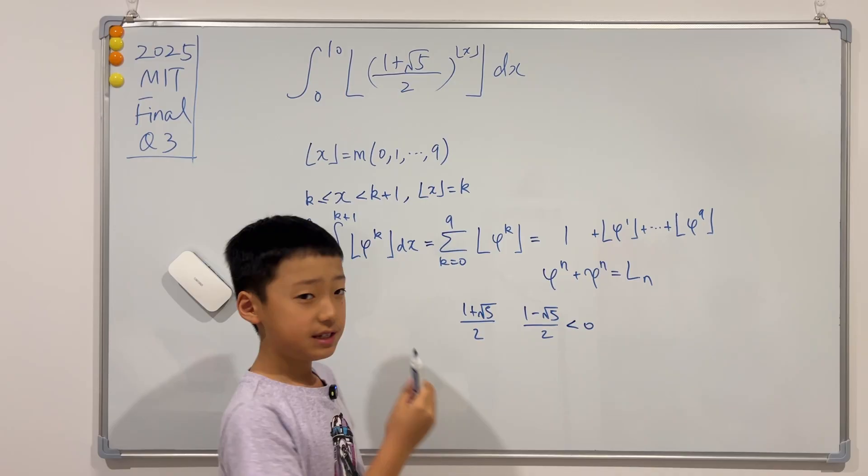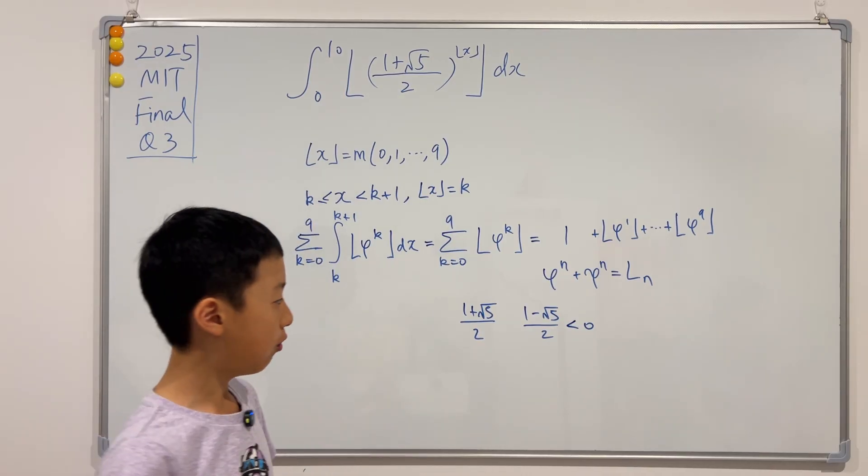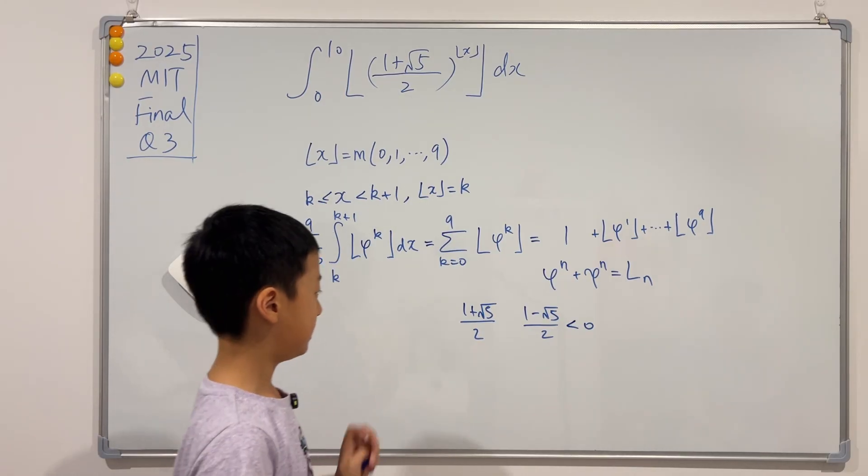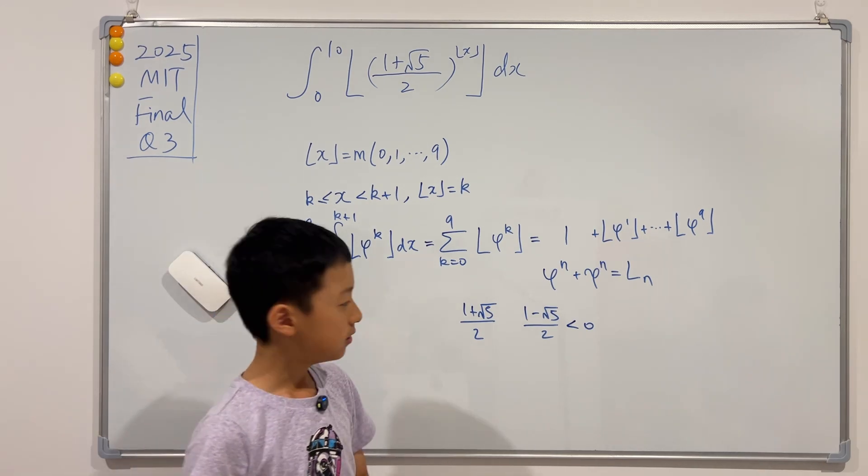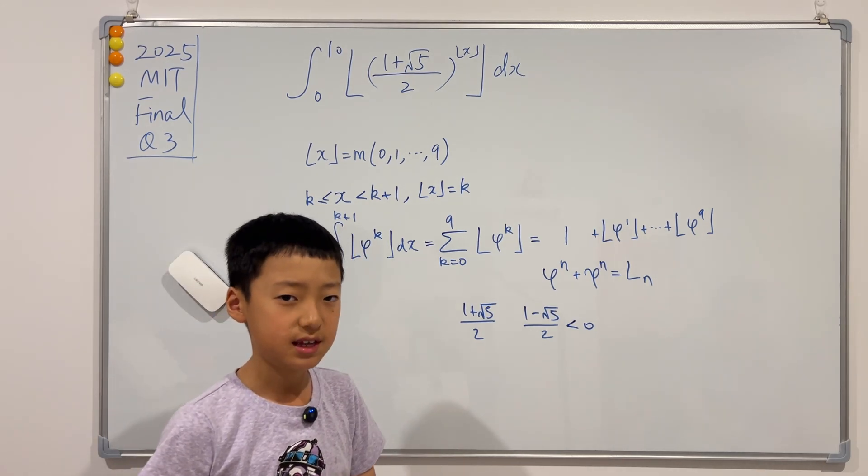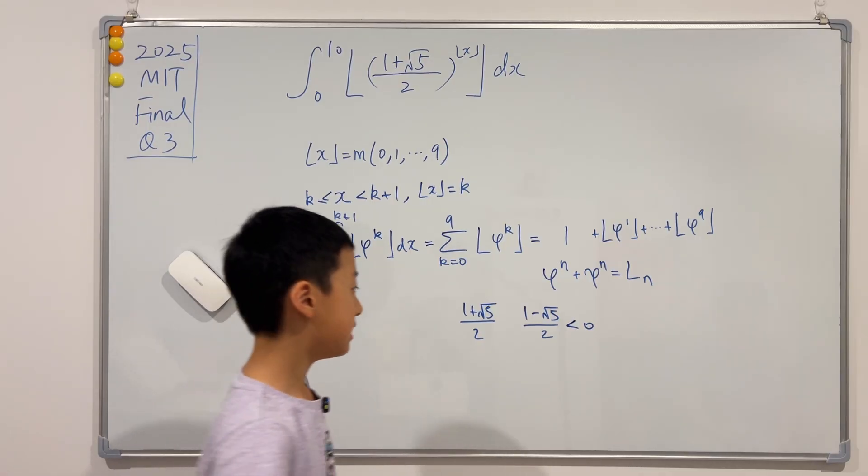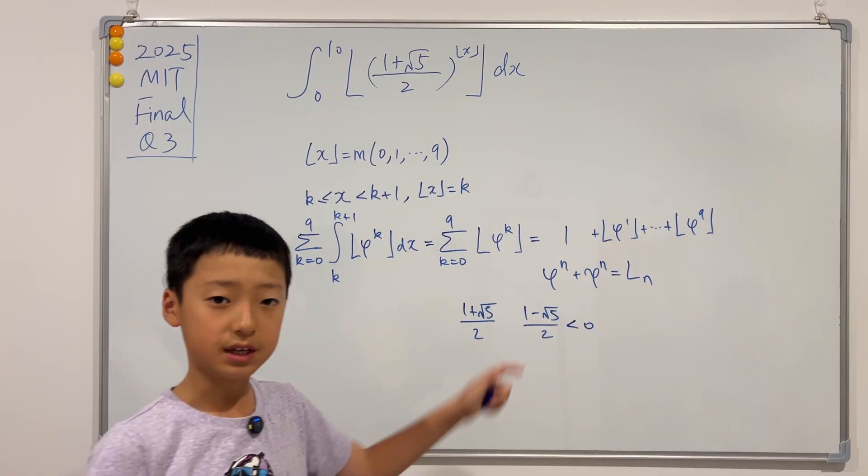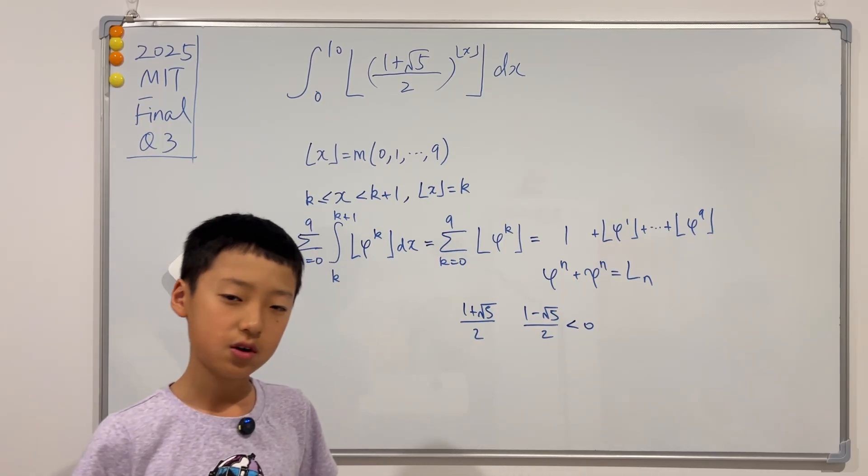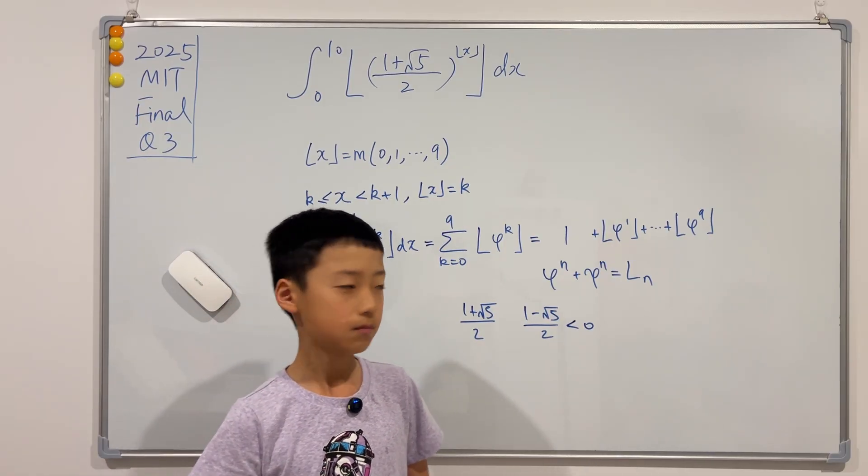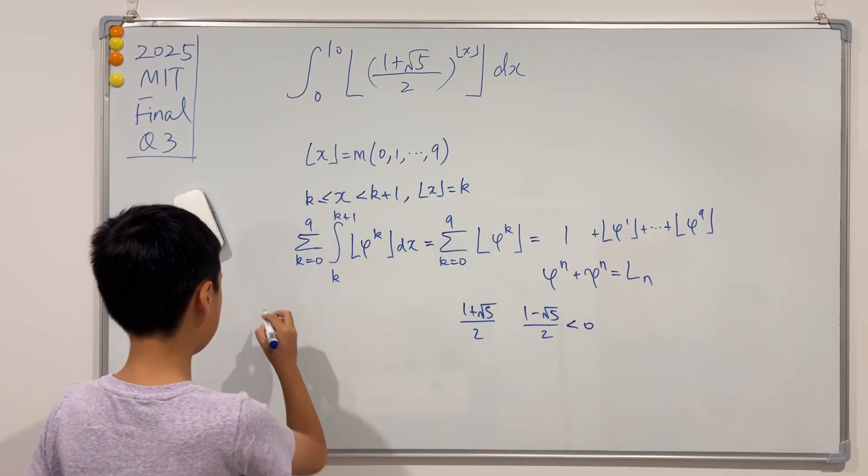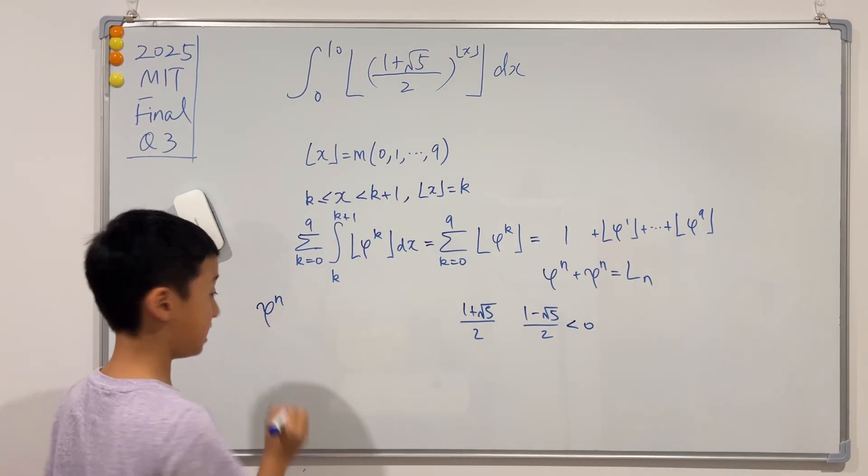But for all odd n, it's always negative. But the one thing they have in common is that the absolute value of c raised to whatever power is always less than one. So properties of c^n: is less than zero when n is odd.